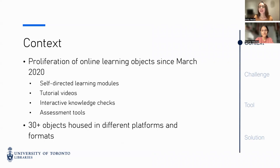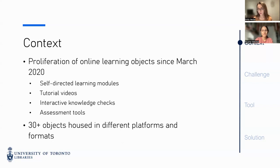For context, like many of you, the OISE Library responded to a shift to remote teaching by substituting or supplementing our synchronous instruction — which had been our primary delivery method — with asynchronous resources. Over the course of 2020 and 2021, we created a number of standalone resources on information literacy topics, such as video tutorials and H5P activities that could be used on demand. We also crafted a series of self-paced learning modules that integrated these videos and activities with explanatory text and assessment tools to holistically guide users through the fundamentals of literature searching. Within just a few years, we had generated over 30 learning objects of various formats.